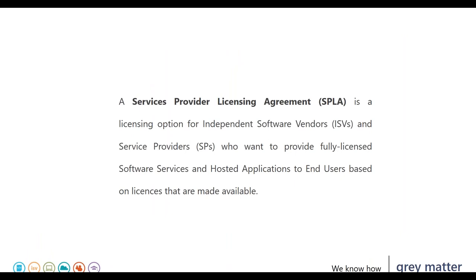As an ISV or service provider under SPLA, you need to provide software services that interact with Microsoft products for end users. For example, if you provide a hosted website or line of business application through Microsoft software, this must be licensed under SPLA. Microsoft licensing does not normally permit hosting otherwise. An ISV might create a CRM cloud-based SaaS application where the end user interacts with Microsoft products through an intermediate product, enrolling through SPLA and reporting licenses based on the Service Provider Use Rights.